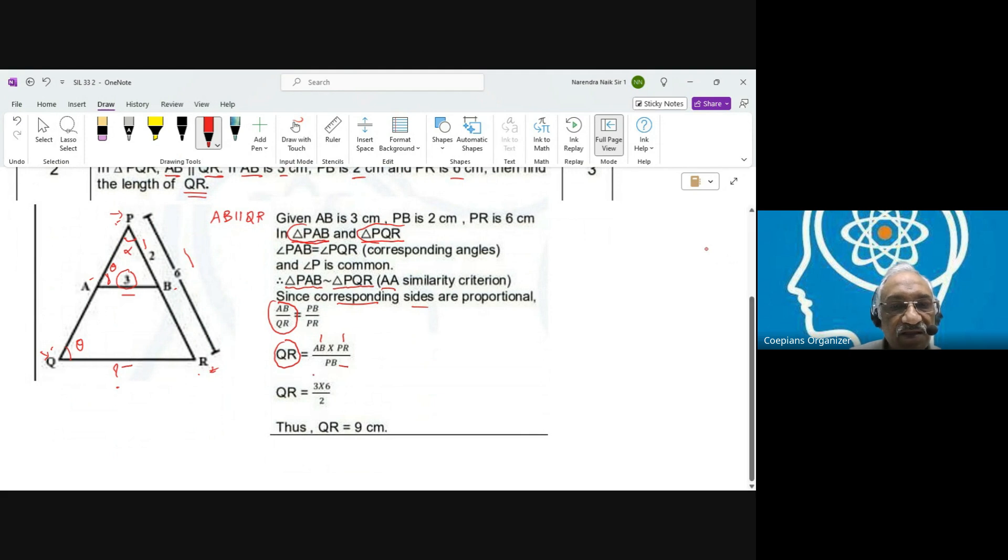So AB is given as 3, PR is given as 6, and PB is given as 2. So 3 into 6 upon 2, which equals—2 and 6 cancel—so 3 into 3 is 9. So the length QR is equal to 9.